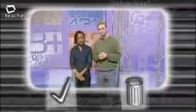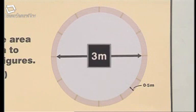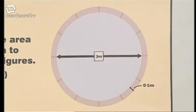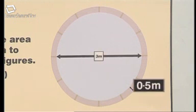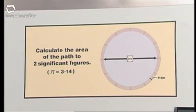It's that time again when both Katie and I tackle the same maths question, but only one answer will be right. The other will contain a deliberate mistake that you've got to spot. So watch carefully to decide if you're going to tick it or trash it. The diagram shows a circular garden pond. The diameter of the pond is three metres, surrounded by a path 0.5 metres wide. Calculate the area of the path to two significant figures using 3.14 as the value of pi.